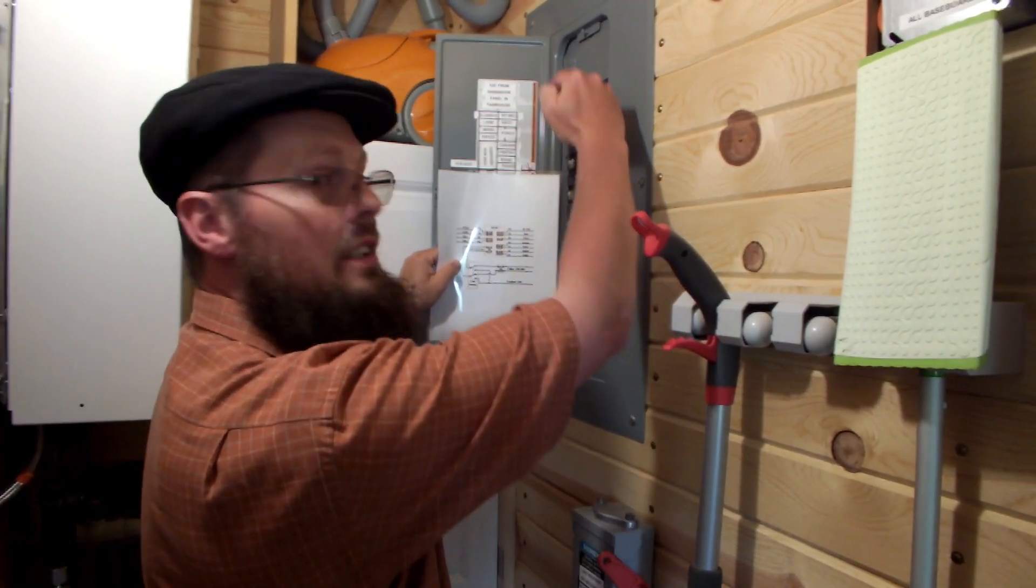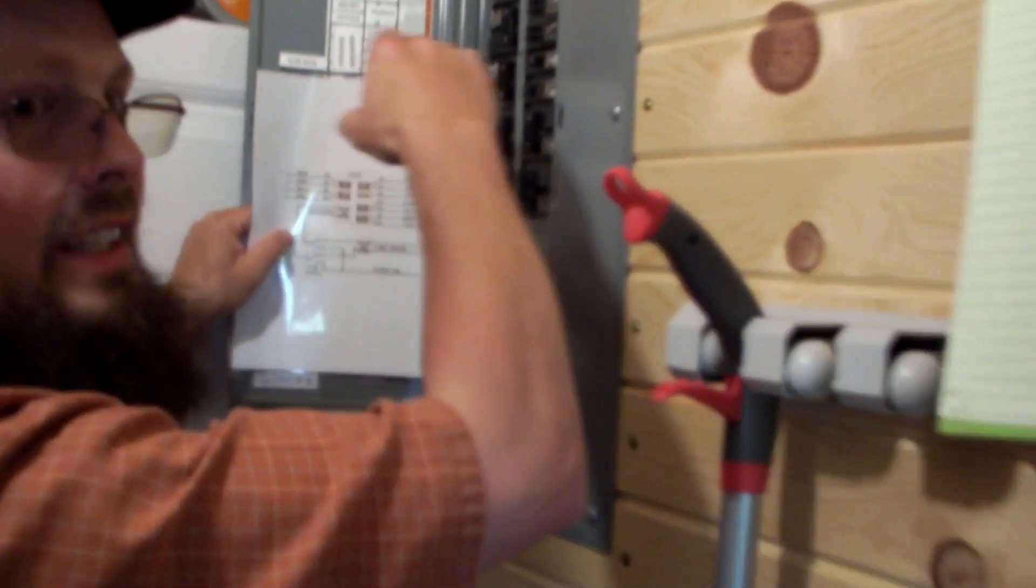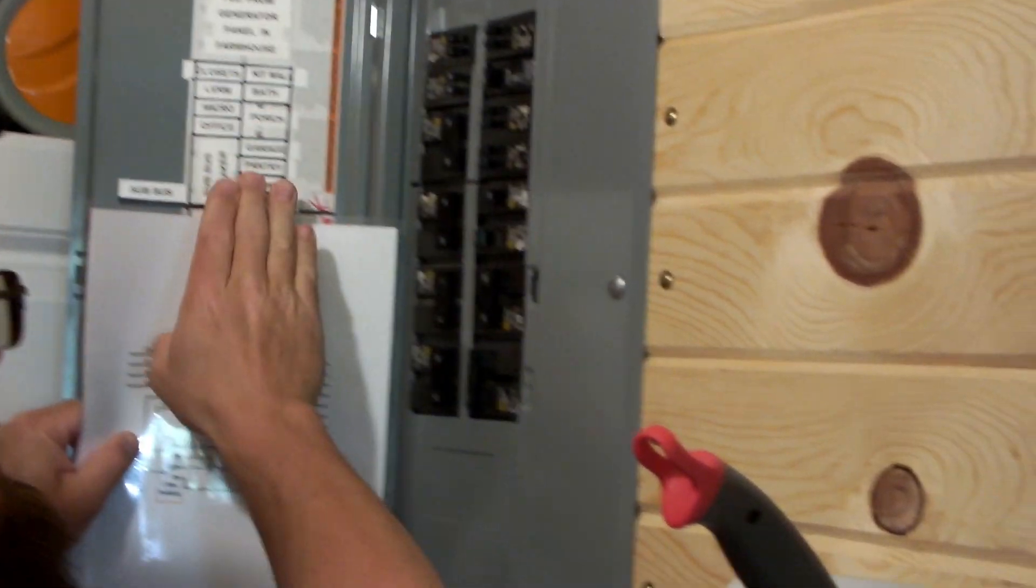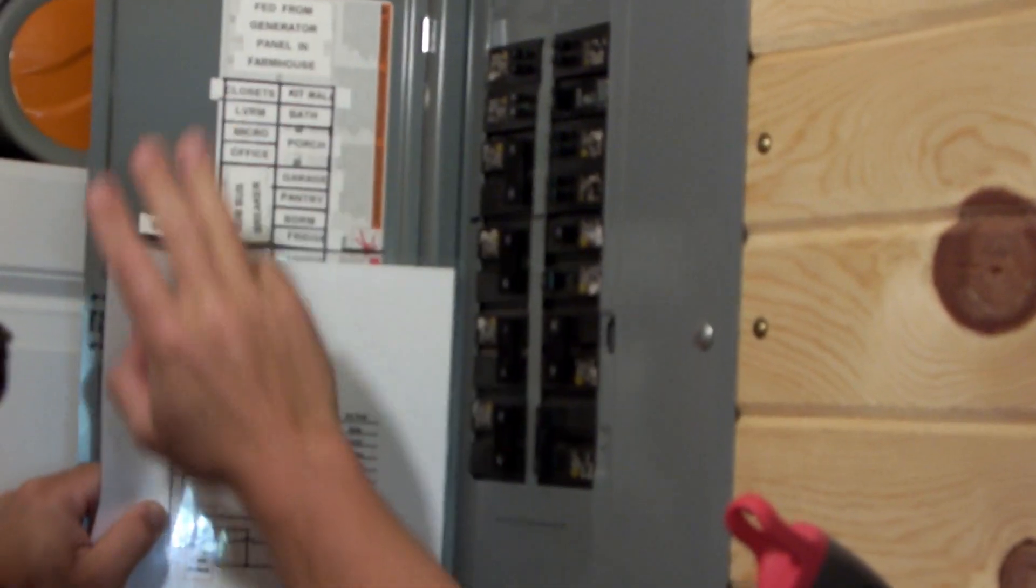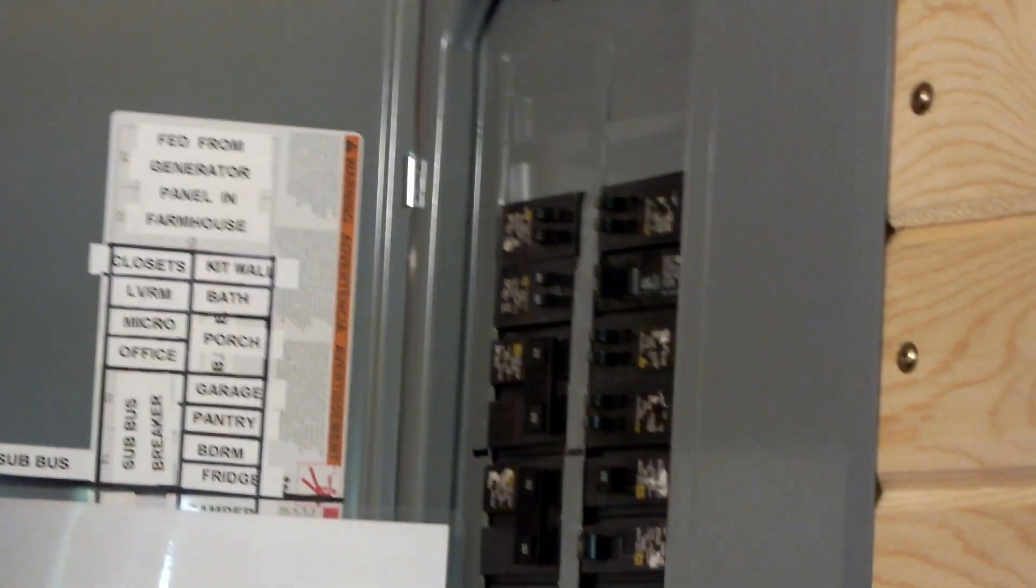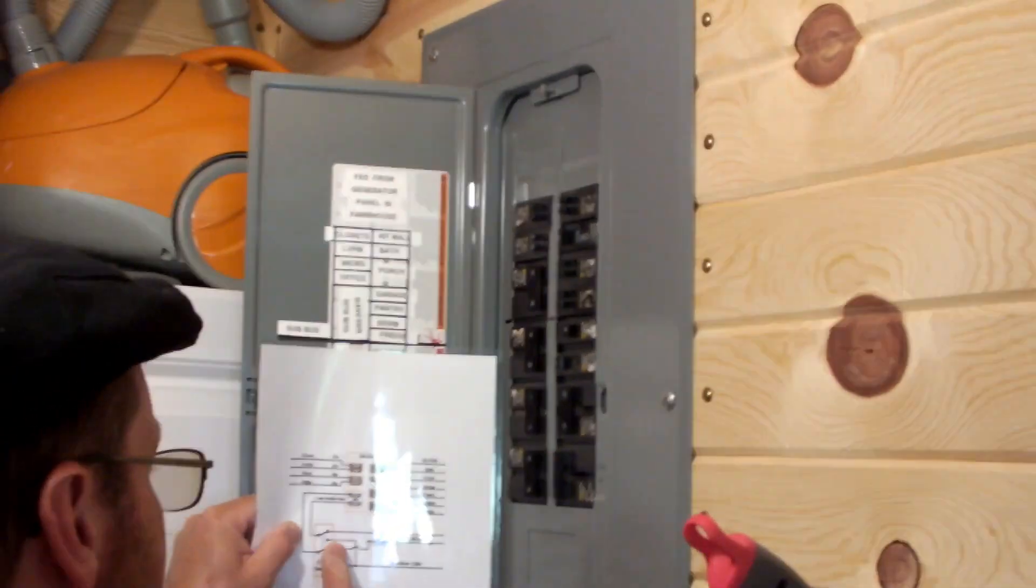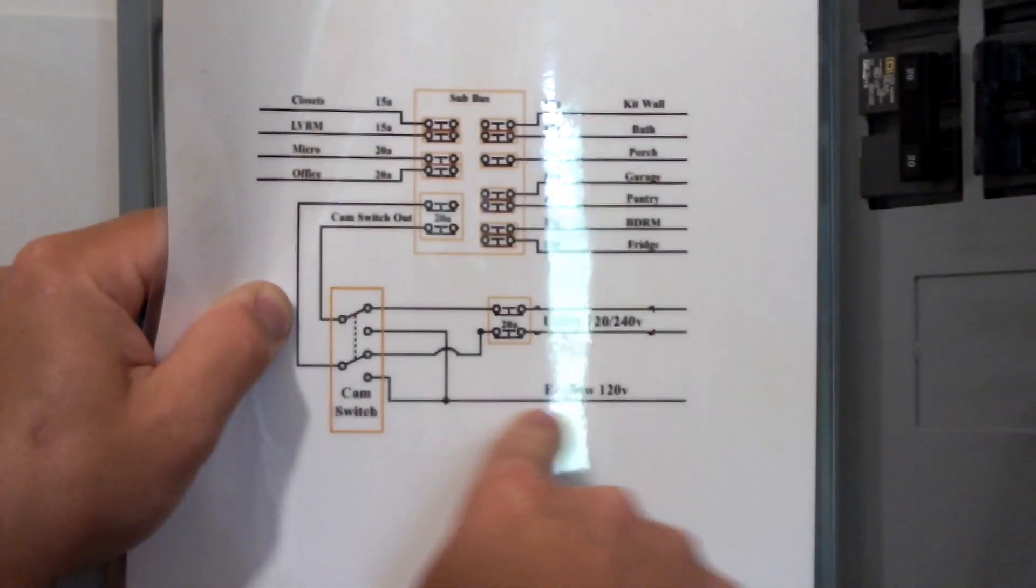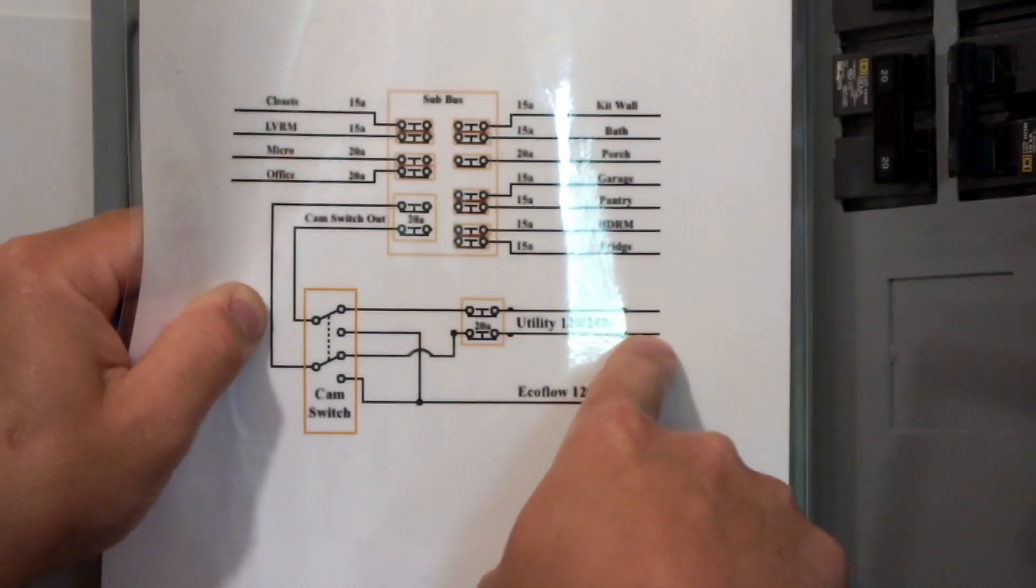So the panel, this is what's called a split bus, where the bus inside is actually physically not connected to the upper half. Treat it like two panels, sub bus and sub panel, sub bus. However, this 20 amp off utility goes out, tags this cam switch.